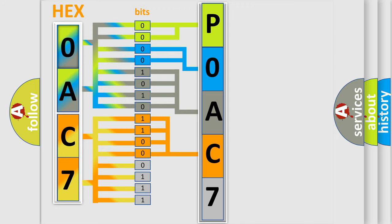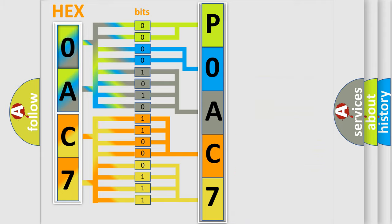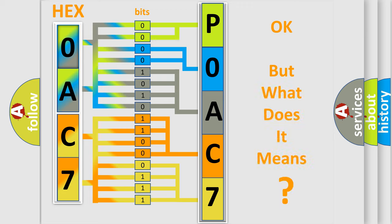A single byte conceals 256 possible combinations. We now know in what way the diagnostic tool translates the received information into a more comprehensible format. The number itself does not make sense to us if we cannot assign information about what it actually expresses.